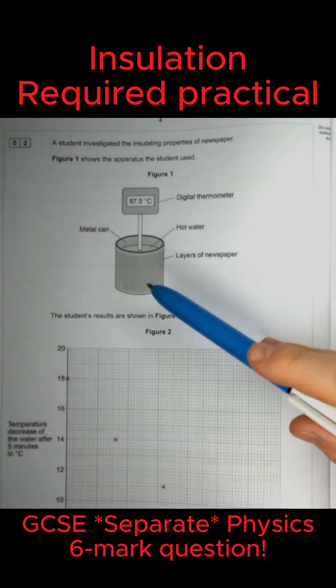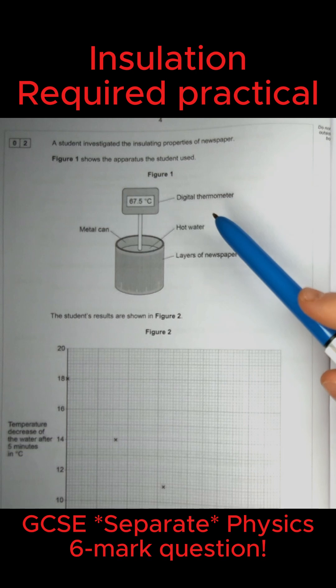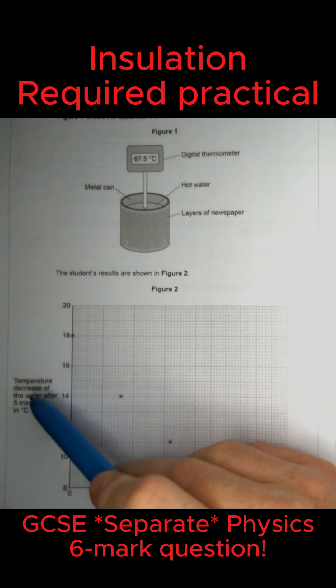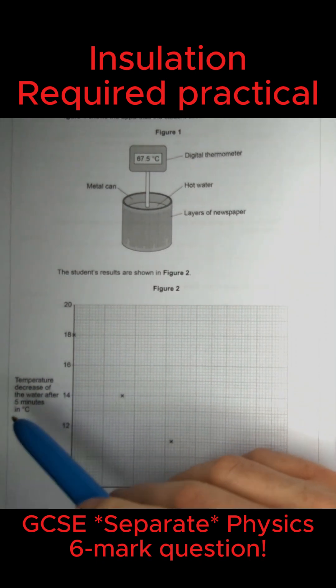They use this equipment: hot water, a metal can, layers of newspaper, and a digital thermometer. The results are shown in the graph with the number of layers of newspaper on the x-axis and the temperature decrease of the water after five minutes.